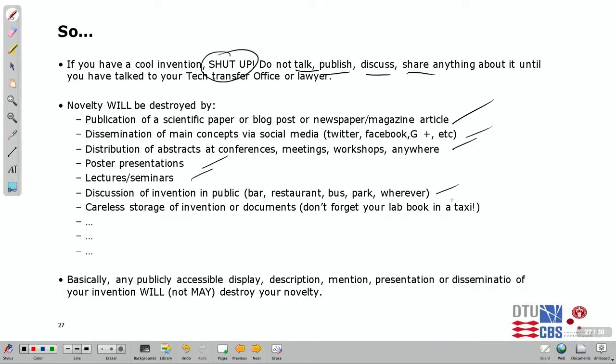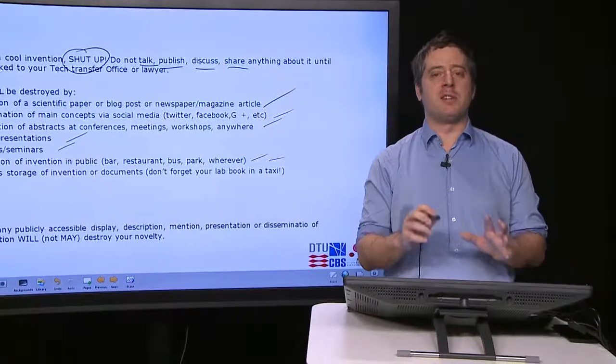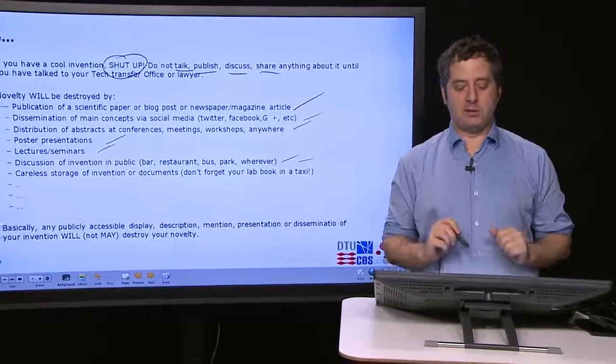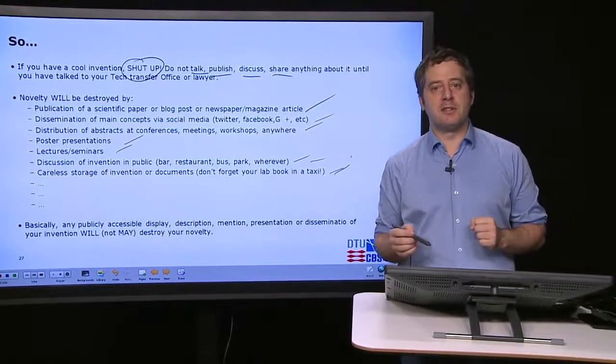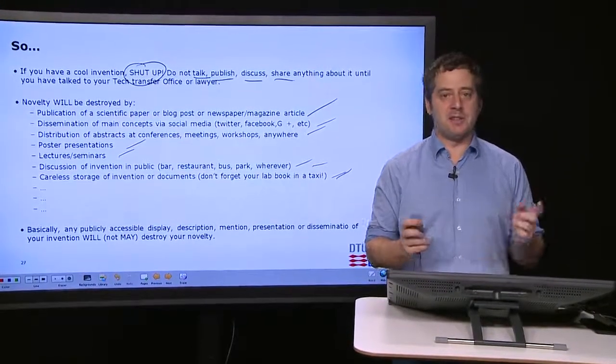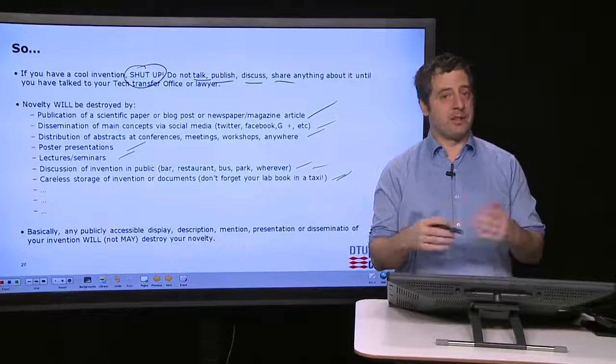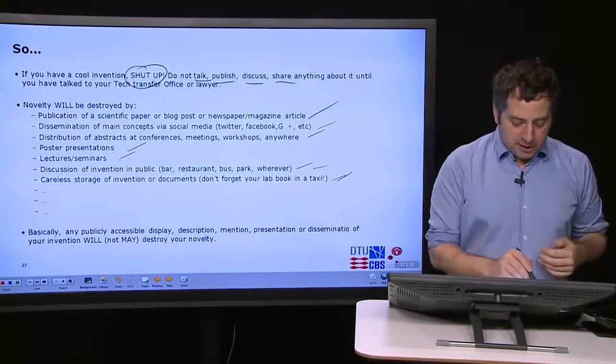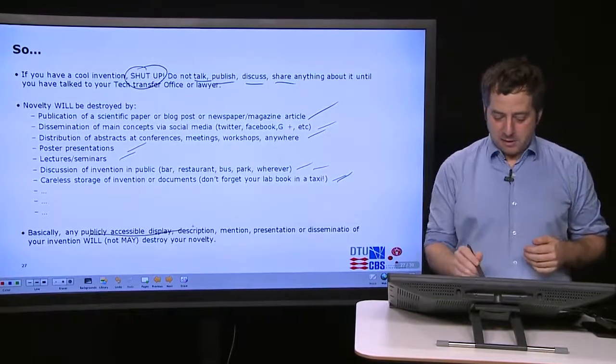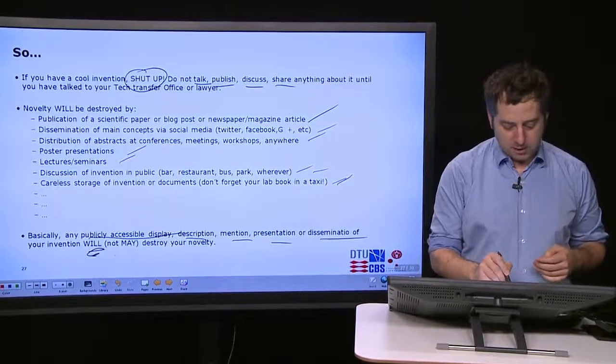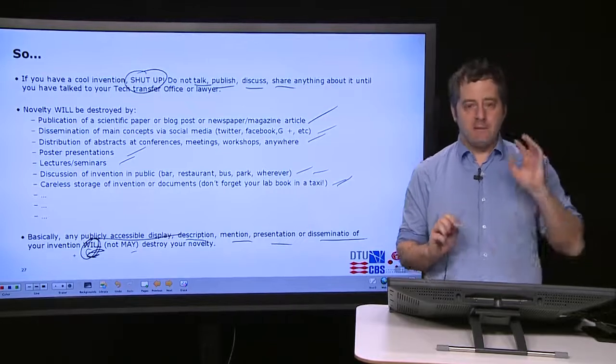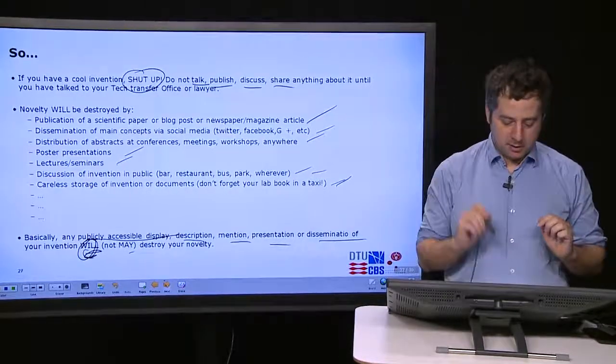Basically what I'm trying to say is don't be very careful with how you talk about your research. If you think you have an invention, try to avoid talking about it until you have talked to somebody that knows what to do with it. For example, a classical thing, you forget your laptop in your taxi or your lab book in your taxi and somebody finds it and reads it and talks about it, that's it, you're out. So basically any publicly accessible display, description, mention, presentation, dissemination of your invention will—and not may—it will destroy your novelty. Very important to keep that in mind.